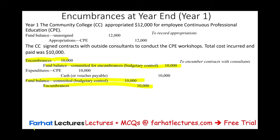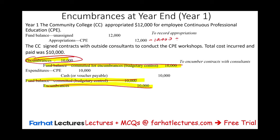Let's review what we've done so far. The encumbrance and its offsetting fund balance committed are gone. The $10,000 encumbrance was removed, the reversal was recorded, and the $10,000 expenditure was recorded. What's left from the appropriation budget? $2,000.